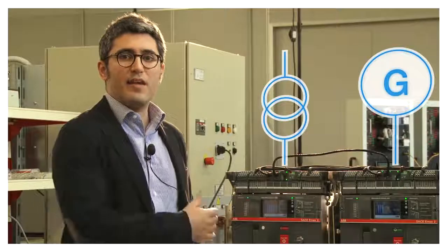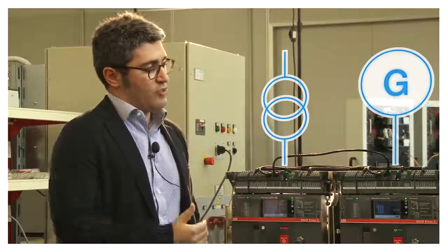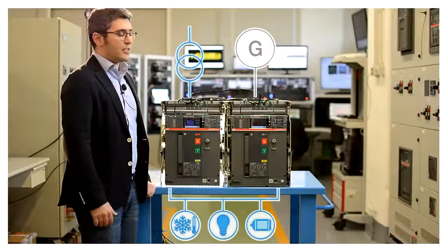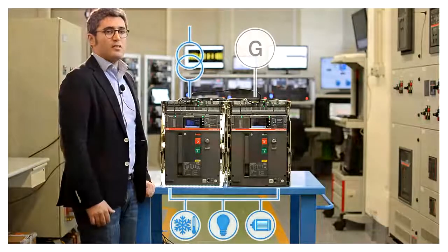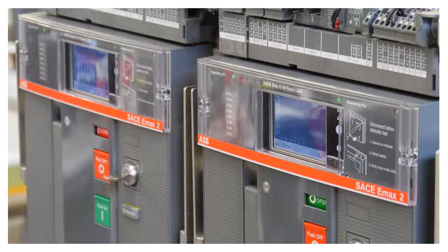As soon as the main line is 100% ok, the generator line or the emergency line opens the circuit and so we can come back to the first situation, the first scenario where we can supply all loads from the main grid.